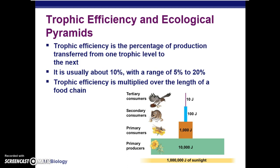When looking at the entire productivity of an ecosystem or food chain, we look at the entire chain. A pyramid of net production represents the loss of energy with each transfer in that food chain. In this example, approximately one-tenth of one percent of chemical energy fixed in photosynthesis by the producers actually reaches the tertiary consumer. In general, different organisms have different efficiencies in terms of what they can pass down.